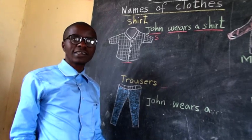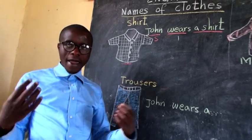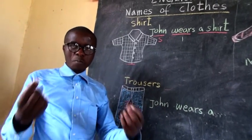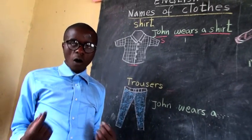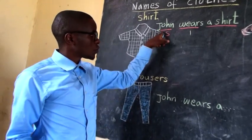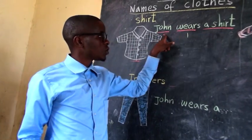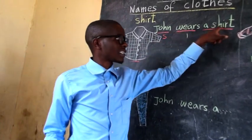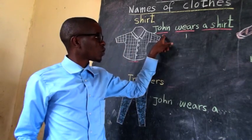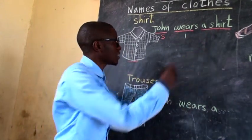The action is to wear, to put on, or to clothe. For example: John wears a shirt. John puts on a shirt. John dresses a shirt.